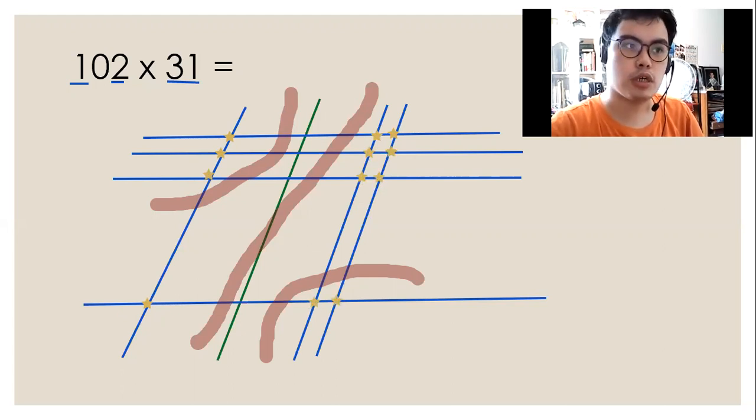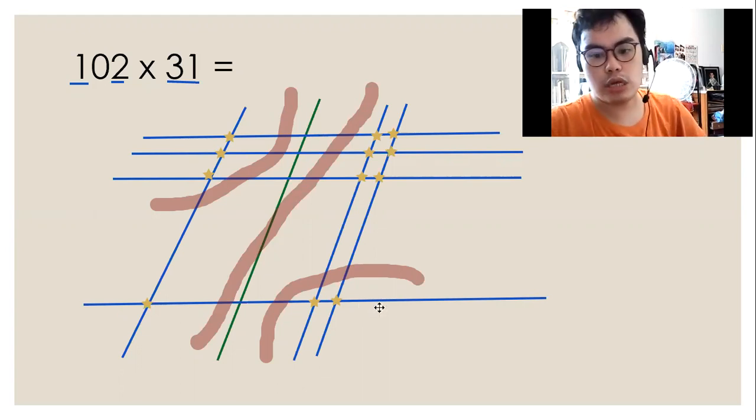So now we have four groups. In each group, we have to count how many stars. Why didn't we place stars on lines intersected by the green line? It's because the green line represents zero.